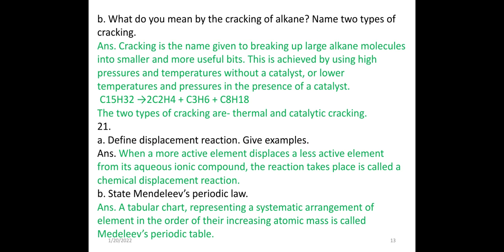Define displacement reaction. When a more active element replaces a less active element from an aqueous ionic compound, the reaction that takes place is called a chemical displacement reaction. For example, copper sulphate solution reacts with iron — iron displaces copper, forming iron sulphate, and the copper is released.